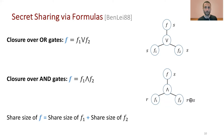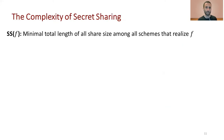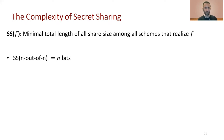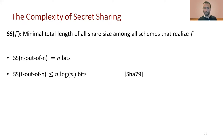Share sizes are the key complexity measure for secret sharing. We define complexity as the minimal total length of all shares among all schemes realizing f. For example, the n-of-n access structure (only authorized coalition is all n parties) takes total share size n bits. The threshold access structure, where all coalitions of size t are authorized, takes O(n log n) bits — this is the threshold secret sharing scheme introduced by Shamir in 1979.